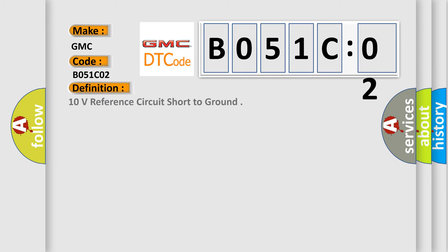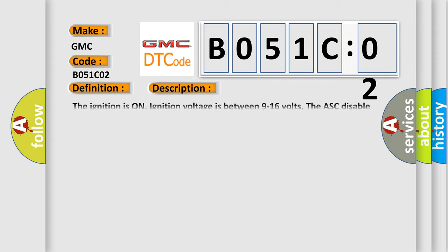The basic definition is 10 volts reference circuit short to ground. And now this is a short description of this DTC code.